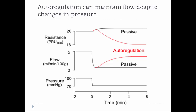The idea of these autoregulation mechanisms — whether metabolite levels or myogenic responses — is to help maintain blood flow. In this diagram, imagine at time zero blood pressure drops for some reason. Without autoregulation, that would result in a huge drop in blood flow to those tissues. Our autoregulation mechanisms kick in, causing local blood vessel diameters to increase and therefore help restore blood flow to those tissues.